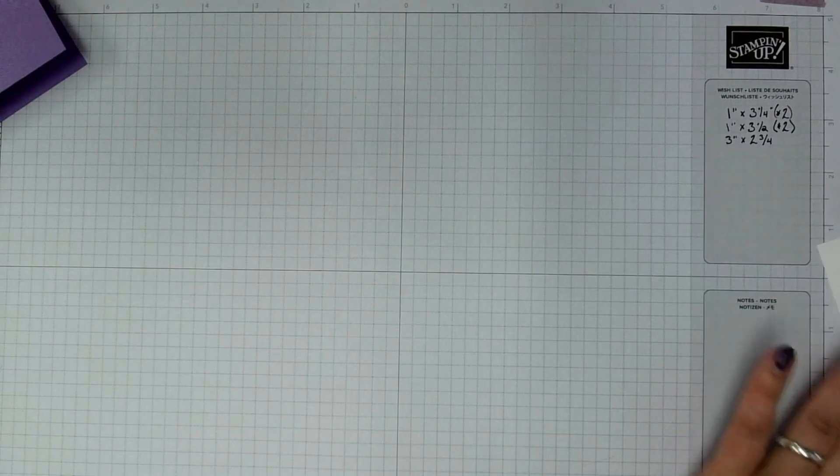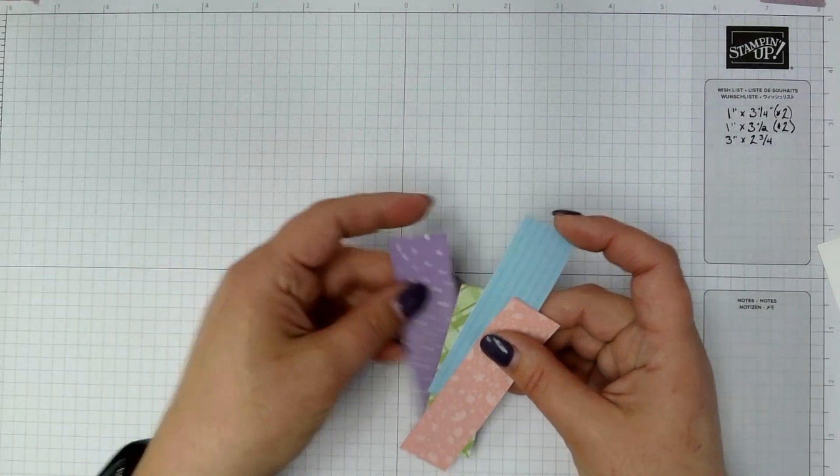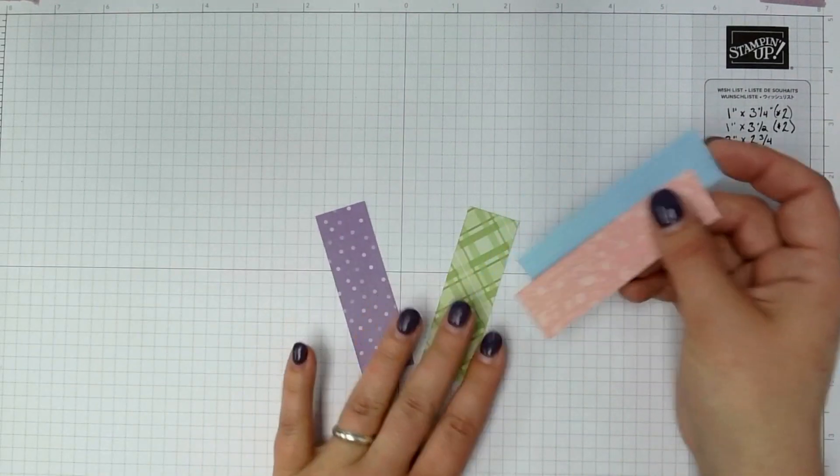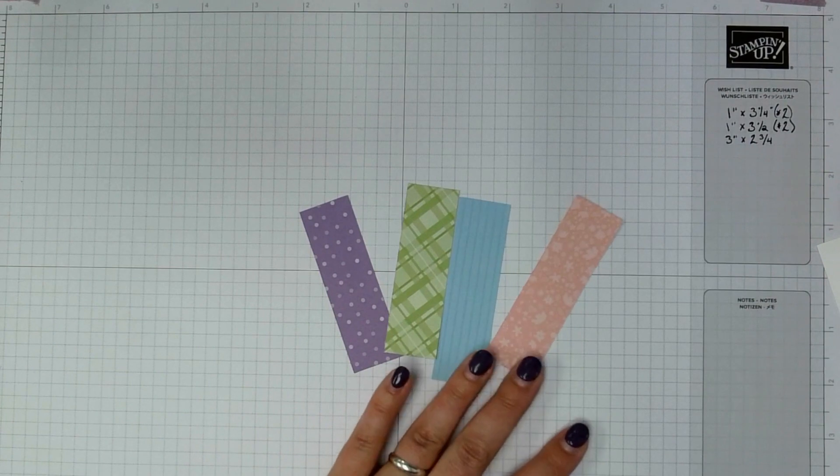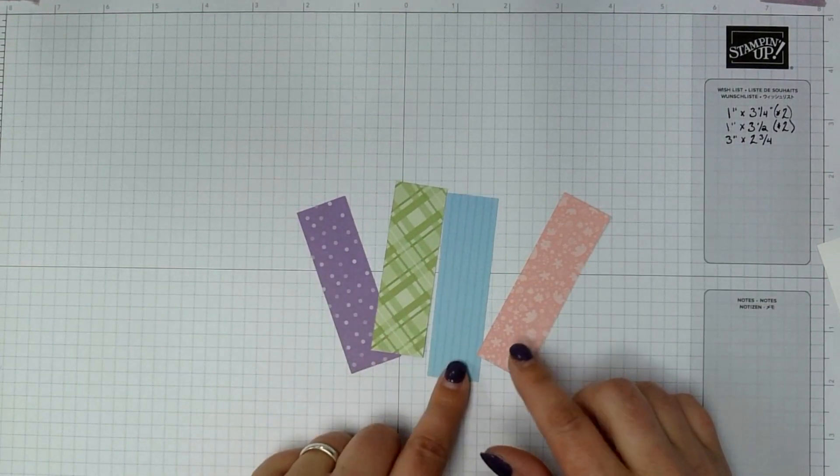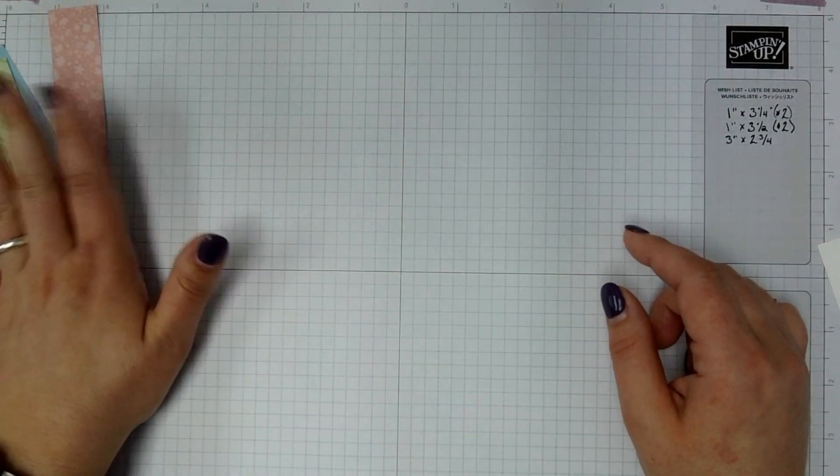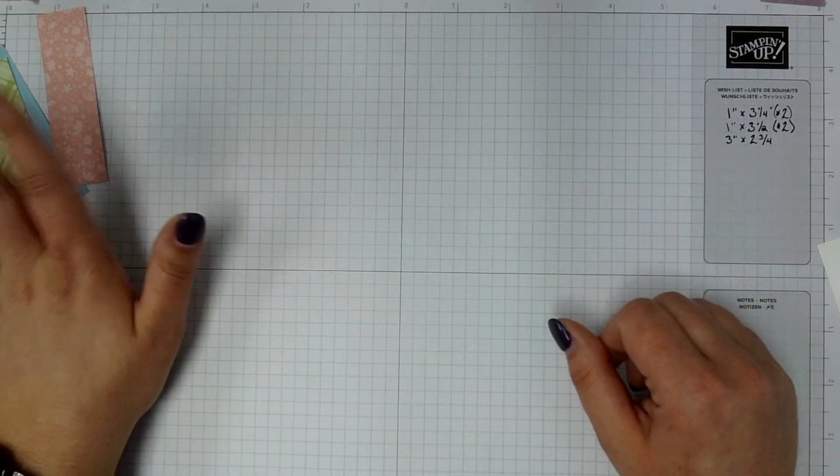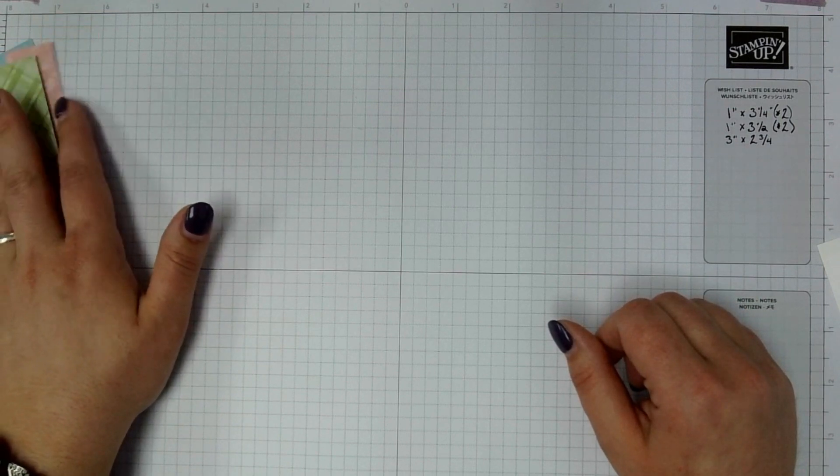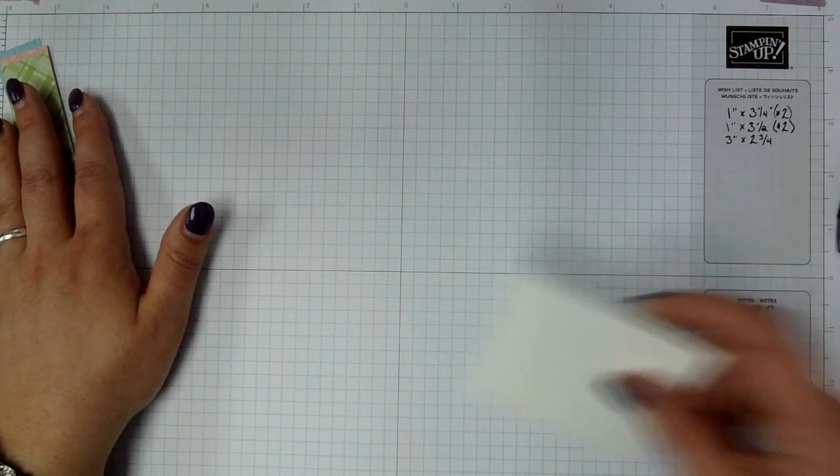I have some of the subtle six by six designer series paper. I wanted a little extra color on my card. So I just took a sheet of Highland Heather, Pear Pizazz, Balmy Blue, and Blushing Bride. And two of these are cut one inch by three and a quarter inches and two are cut one inch by three and a half inches. I'm just going to set those aside for now.